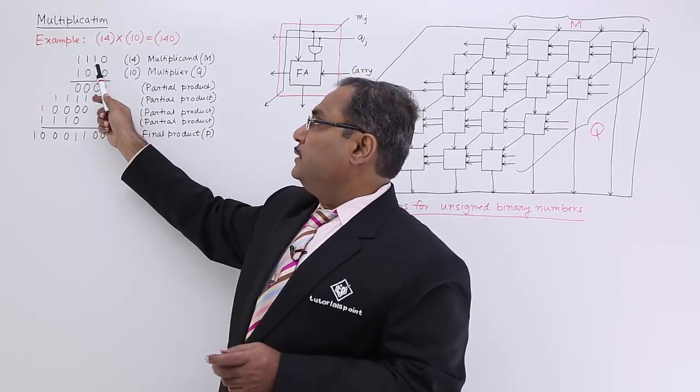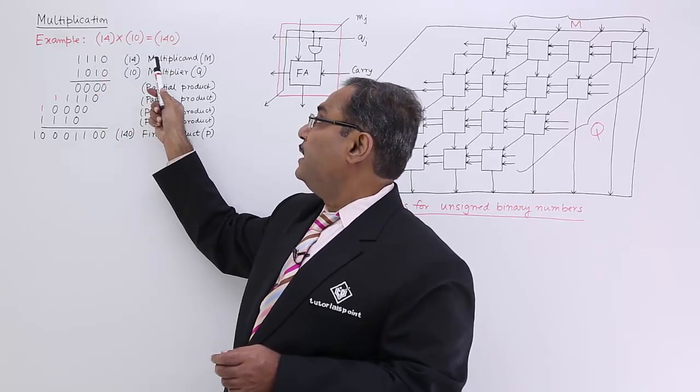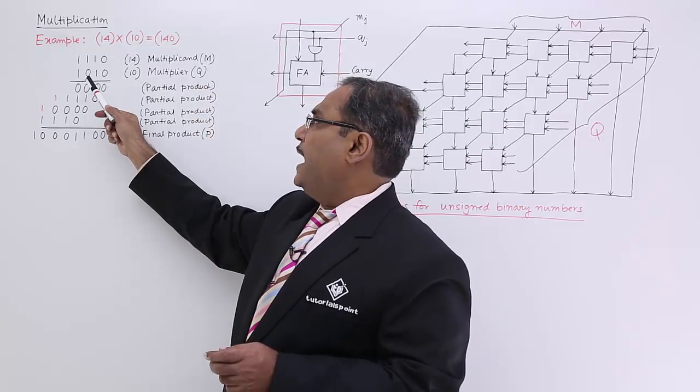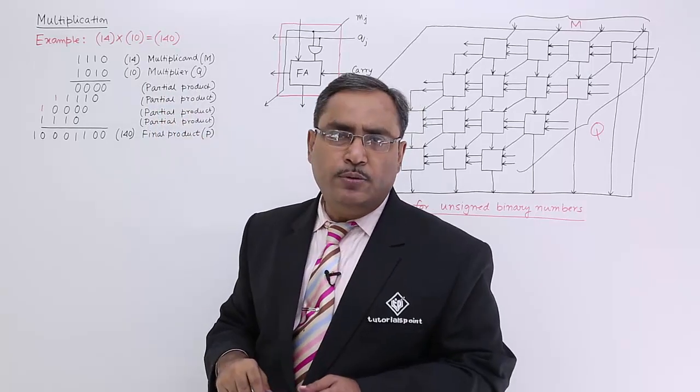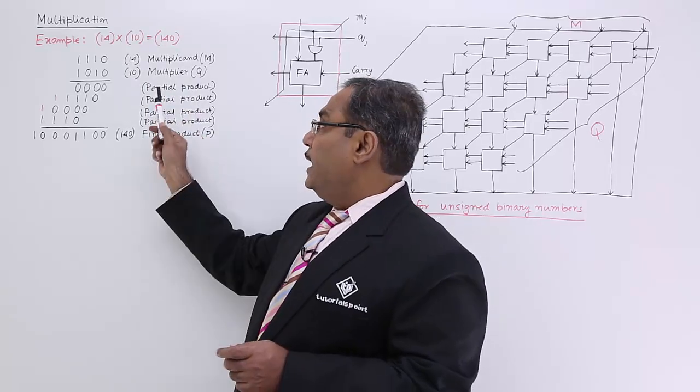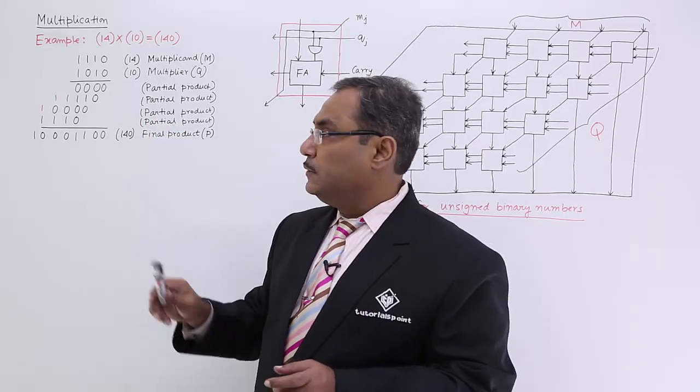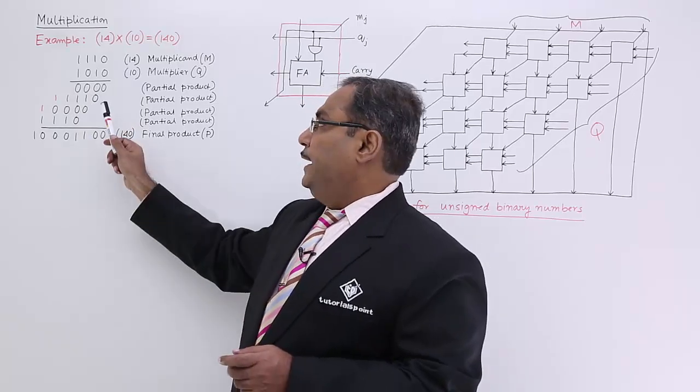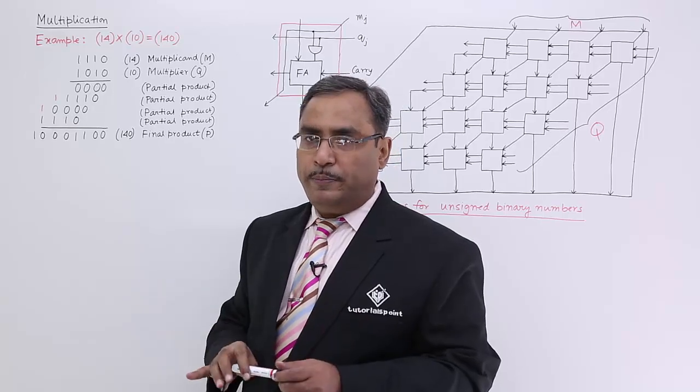We know that the number which is going to get multiplied is known as multiplicand, which will be kept in the M register. And this particular 10 will be the multiplier which will be kept in the Q register initially. These are the partial products, 4 times because 4 bits are there in the multiplier. It's not mandatory that multiplier and multiplicand will have the same number of bits always.